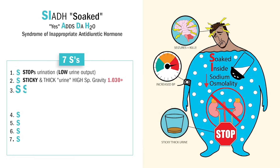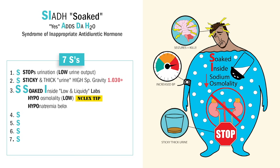Think SI for soaked inside, or basically swollen inside. We get really low liquidy lab values — keywords here: hypo or low serum osmolality, and hyponatremia or low sodium. Always huge NCLEX favorites. So again, SI — think soaked inside, low liquidy labs. Keywords: decreased blood serum osmolality, and decreased sodium below 135.